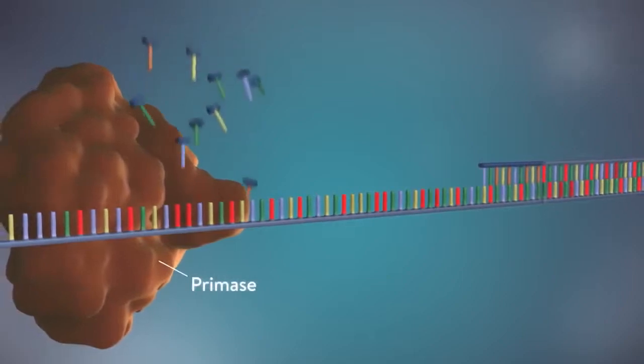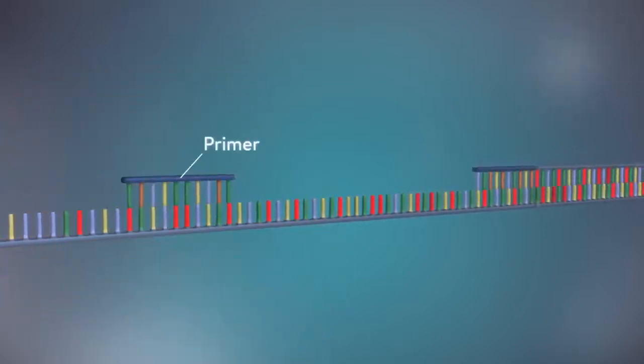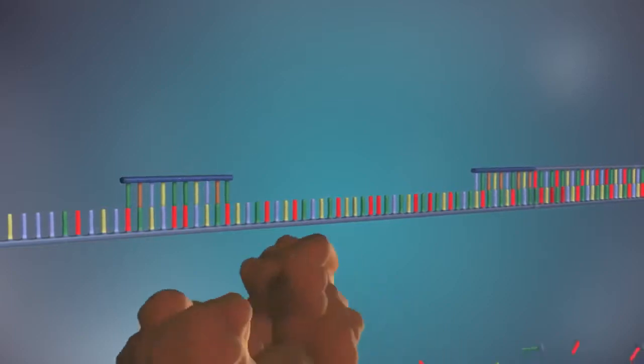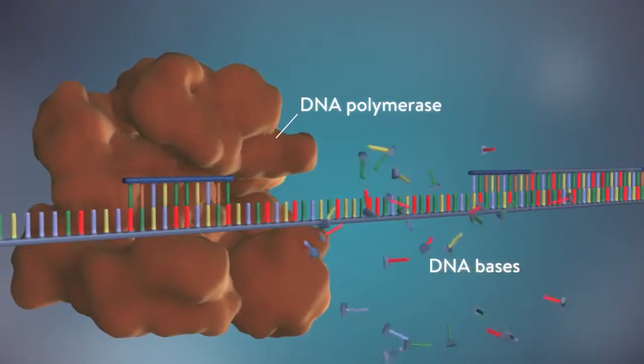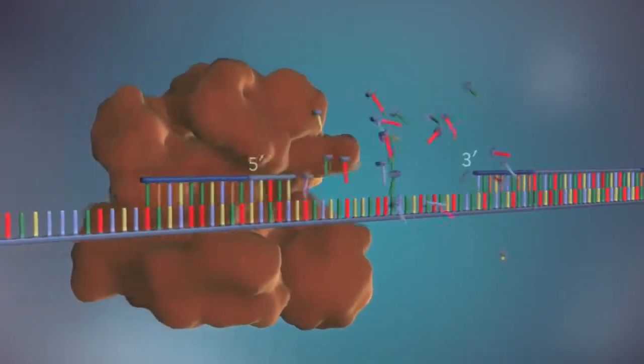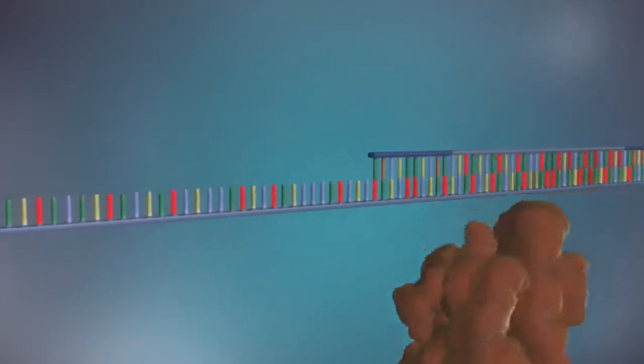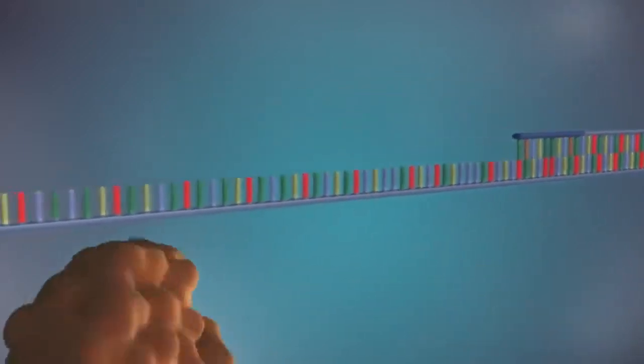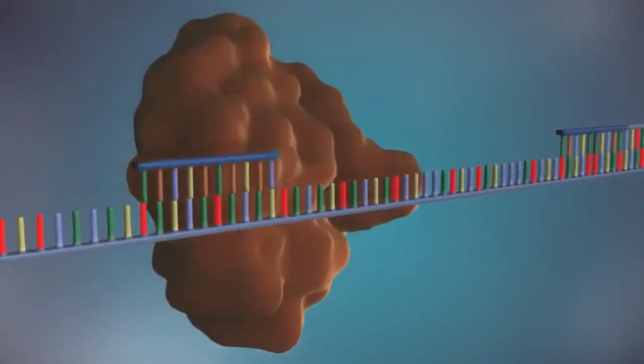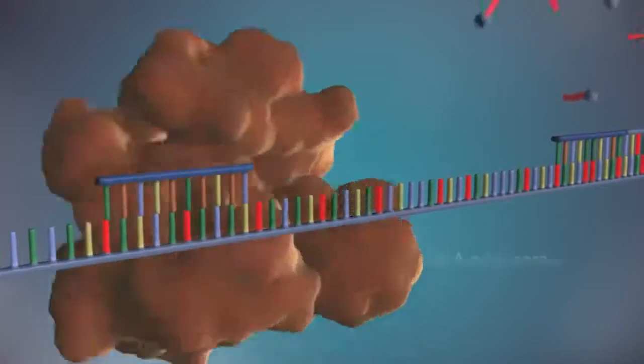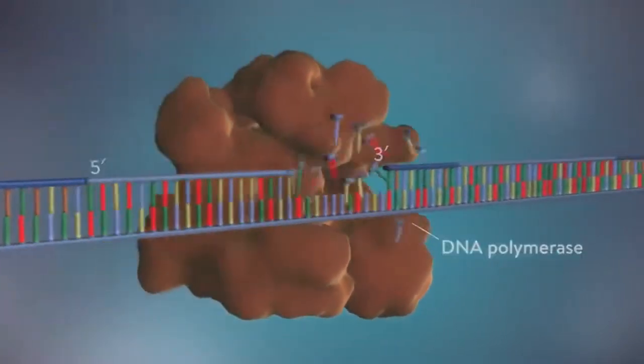Each fragment is started with an RNA primer. DNA polymerase then adds a short row of DNA bases in the five prime to three prime direction. The next primer is then added further down the lagging strand. Another Okazaki fragment is then made and the process is repeated again.